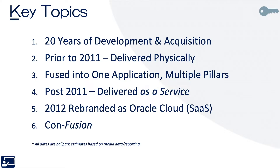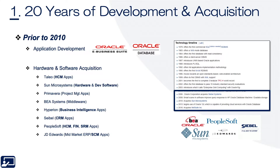Please note that dates are ballpark estimates based on media data or what I have seen in reporting. First topic: 20 years of development and acquisition. Prior to 2010, Oracle spent roughly 20 years acquiring a premier portfolio of technology assets. This page walks through those assets by function, as well as when they were acquired. During that same period, Oracle continued to develop its own technology assets such as middleware, its relational database, and EBS or e-business suite — its back office HR, finance, and supply chain applications.